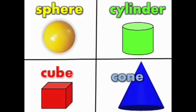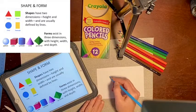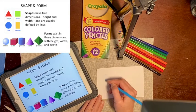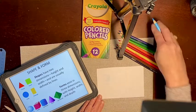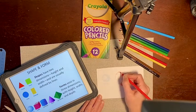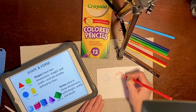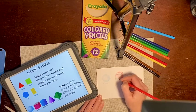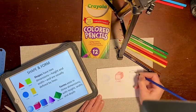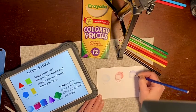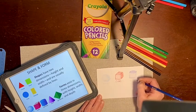You can show depth in a form by shading the side furthest from the light source. I've chosen to practice a sphere, cube, cylinder, and cone.